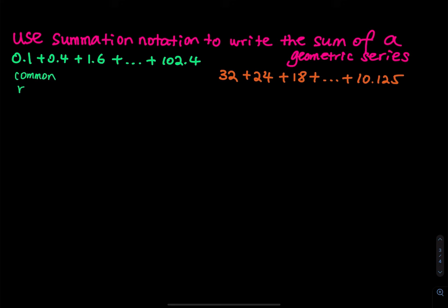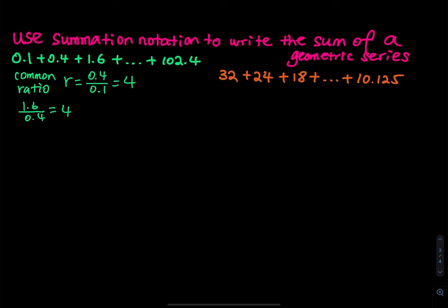How do you find the common ratio? You take the next term divided by the current term. So r is equal to 0.4 divided by 0.1, which is equal to 4. To make sure, I will try a few more pairs: 1.6 divided by 0.4, and that is also equal to 4. So the common ratio is equal to 4.